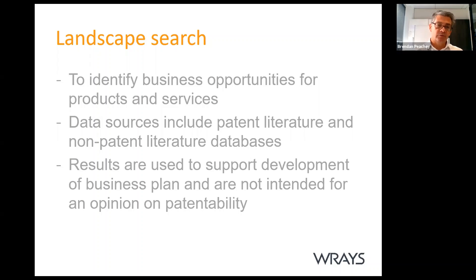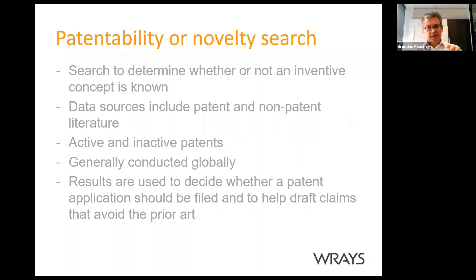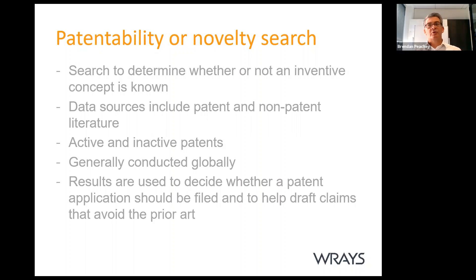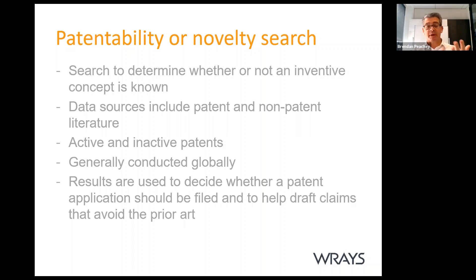The next type is a patentability or novelty search. Novelty in patent language simply means 'new' — to get a patent you need to be the first person in the world to have done that. You'd do this at the start of a project, or once you have a prototype, to see if your invention is patentable. You search both patent and non-patent databases, lapsed and registered ones — anything published anywhere, ever.